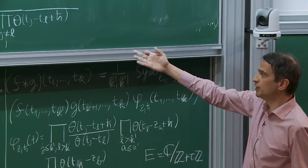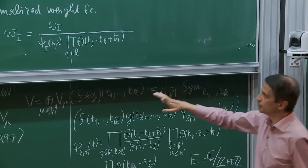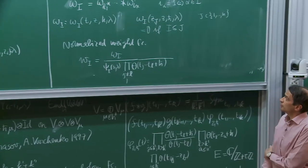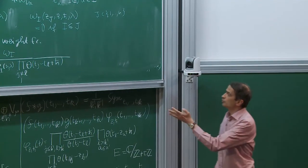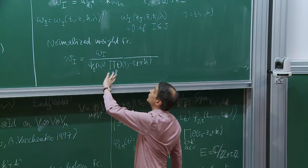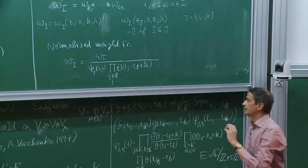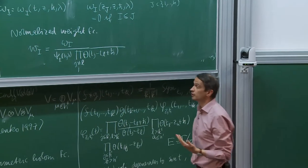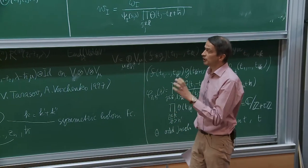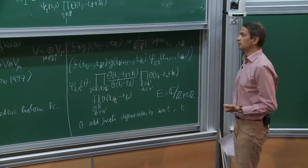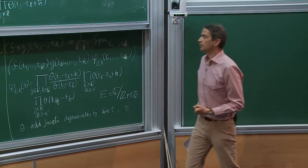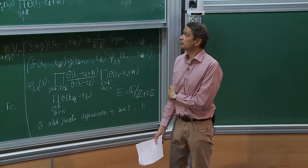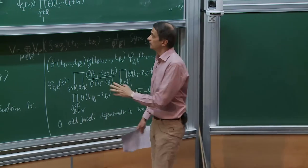A slight generalization works for other representations, and in this way — using this trick — you can construct R-matrices for other representations. Another application of these weight functions: there are dual weight functions given by a similar construction, which are coefficients in the eigenvectors for the so-called Gel'fand-Zetlin algebra. In the quantum group you have a commutative subalgebra given by the determinant and perhaps the first matrix element of the L-matrix defining the quantum group, and using weight functions you can construct common eigenvectors.